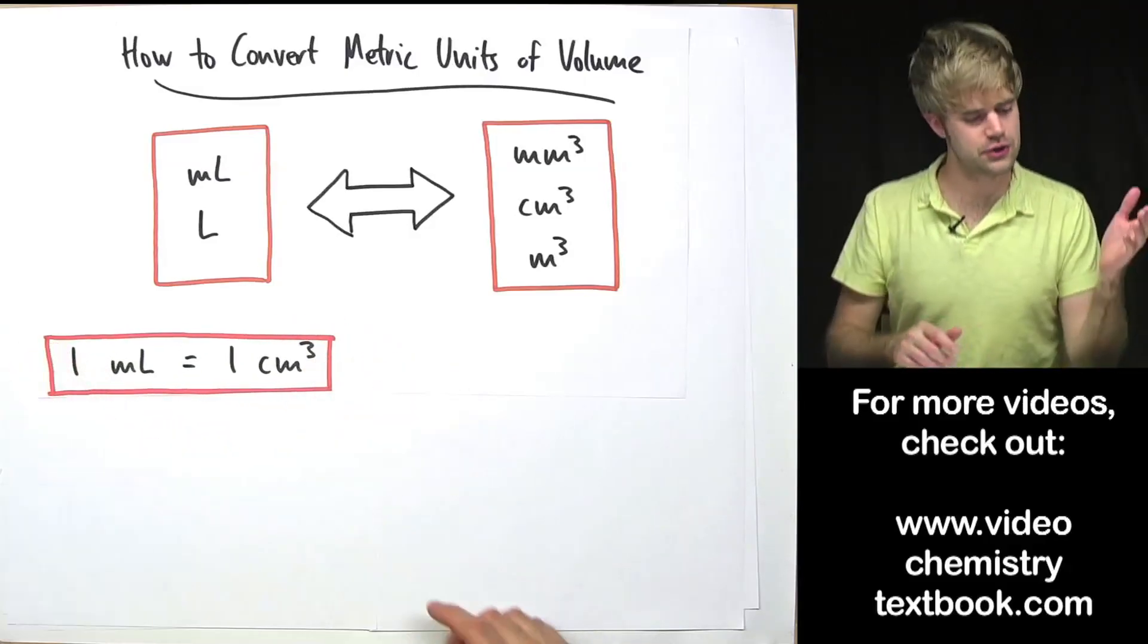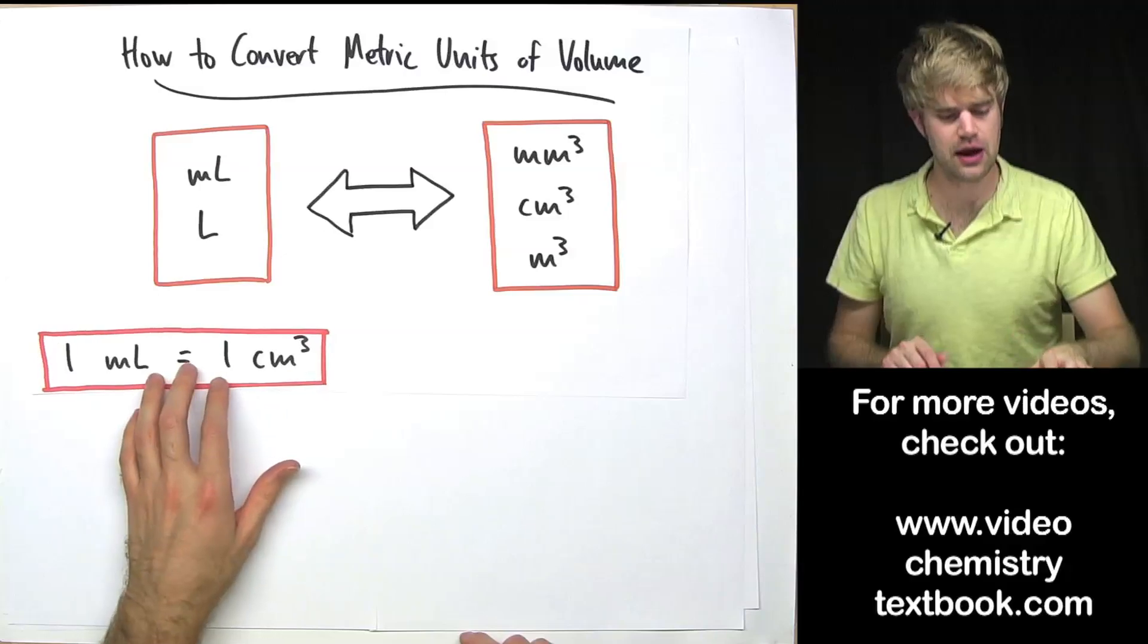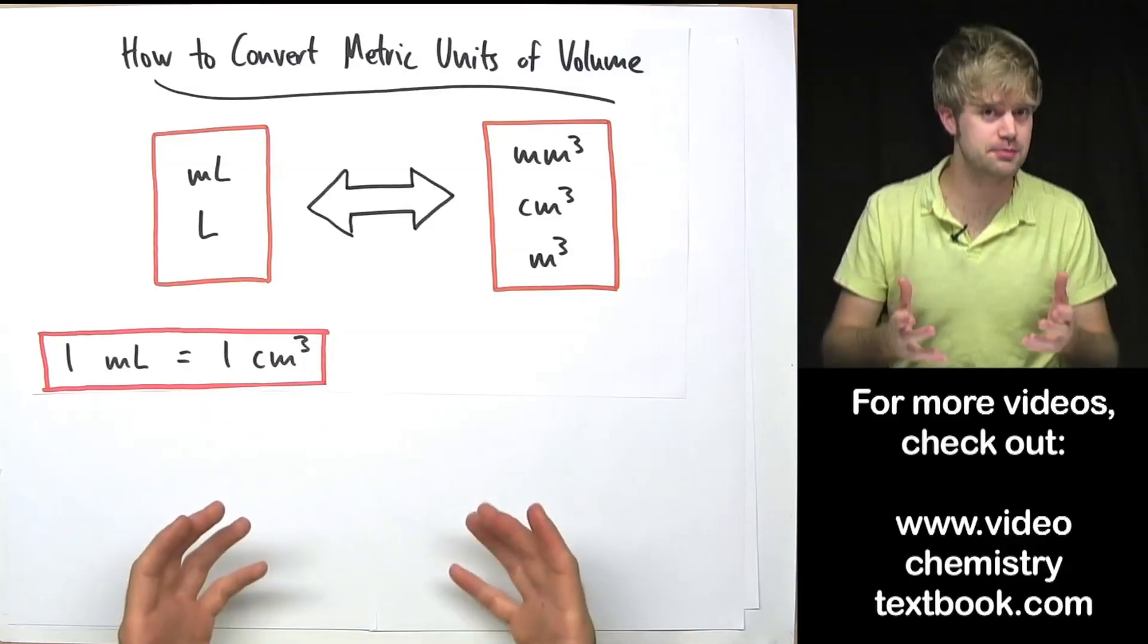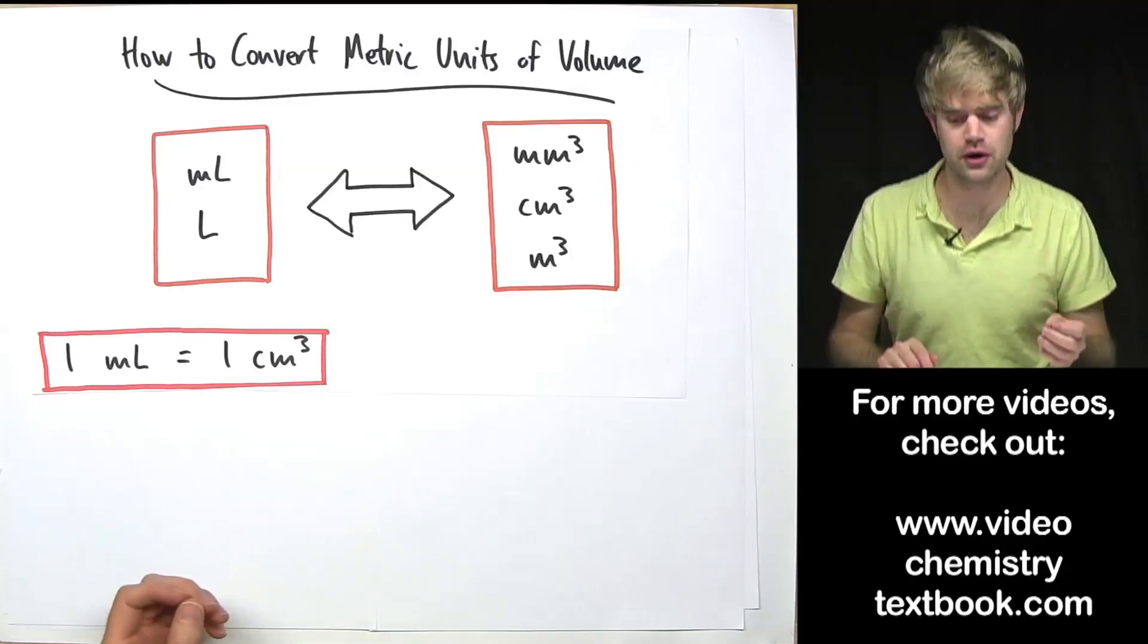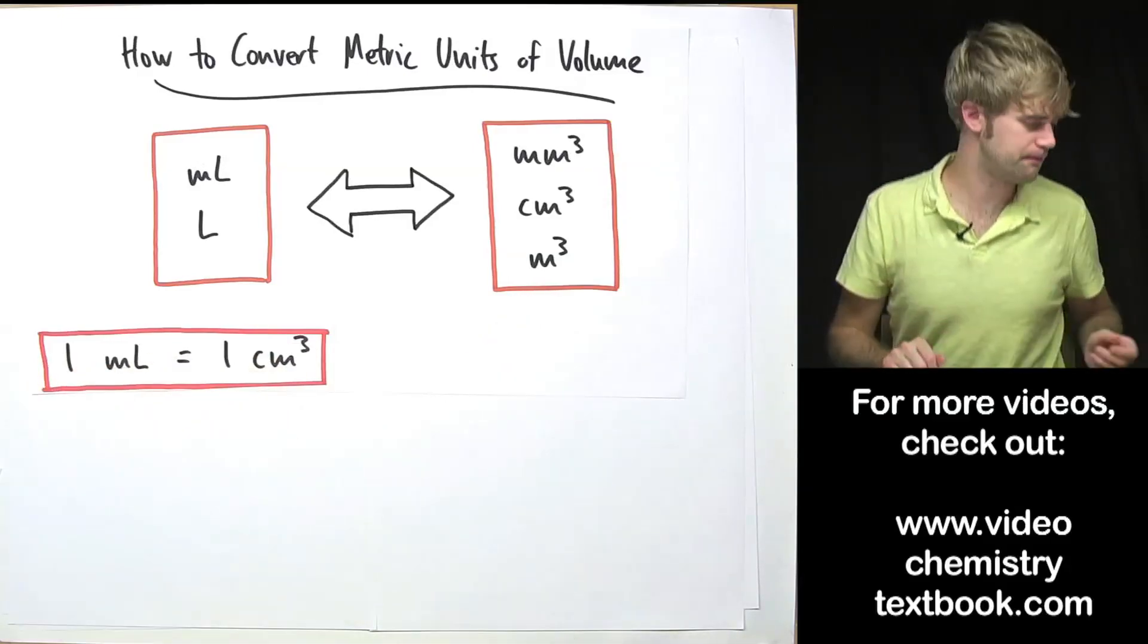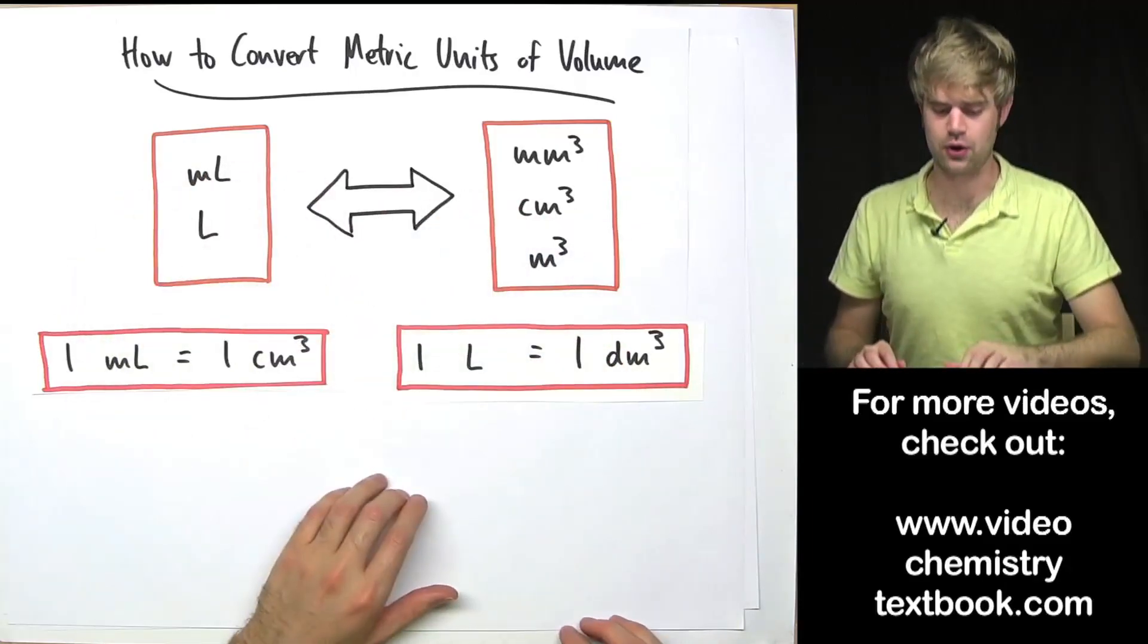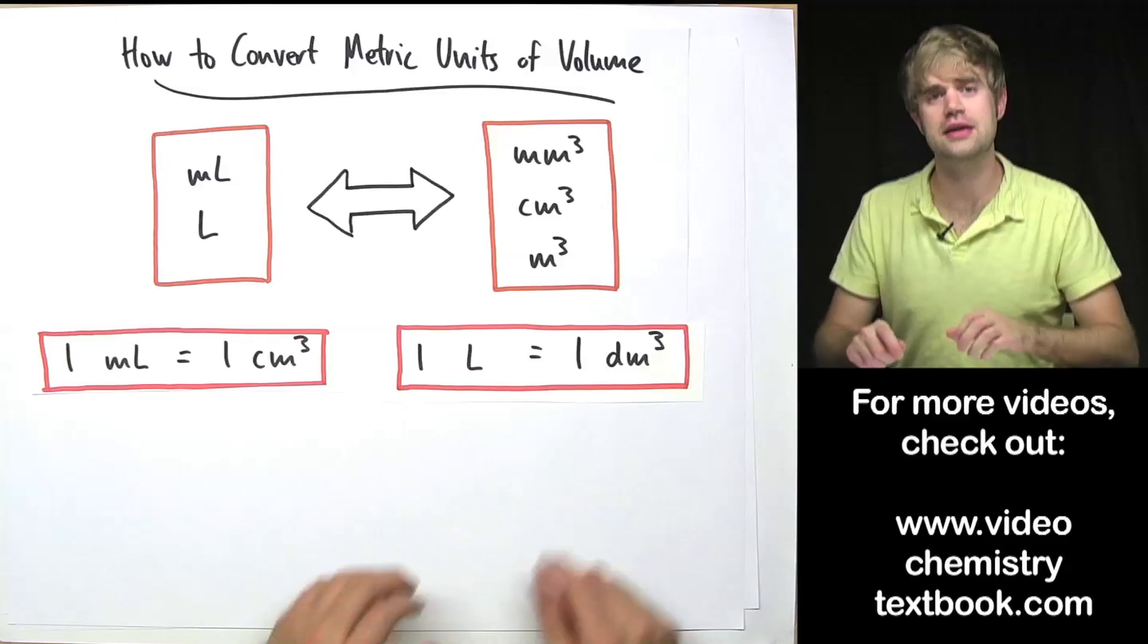For one, it turns out that one milliliter is the exact same thing as one cubic centimeter. So if you ever watch a hospital show and you hear a doctor scream out for two cc's of epinephrine, they're talking about cubic centimeters, the same thing as two milliliters of epinephrine. The other relationship that we can use to convert between these two categories is that one liter is the same as one cubic decimeter.